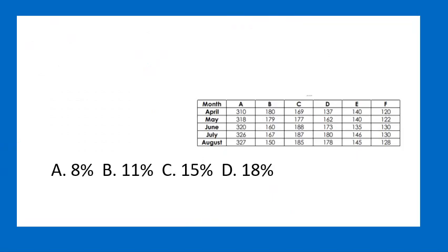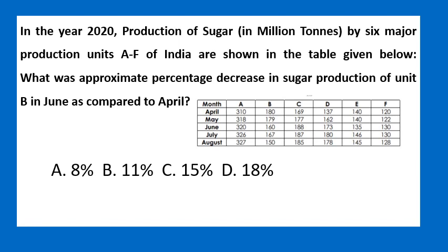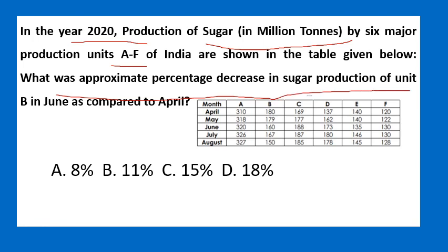Let us look into another question. In the year 2020, the production of sugar in billion tons by six major production units A to F in India is shown in a table. What is the approximate percentage decrease in sugar unit B in June compared to April?